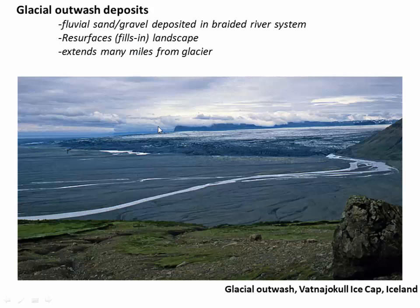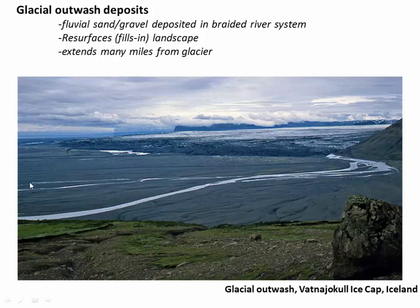Another depositional feature is the glacial outwash deposit — extensive deposits of sand and gravel usually deposited by a high-energy braided river, such as the one seen here coming off the Vatnajökull ice cap in Iceland. This river can spray sediment across a wide plain, pushing sand and gravel many miles from the tip of the glacier. Valleys like the Champlain Valley contain a lot of sand and gravel deposited by river systems running along the edge of the ice sheet.